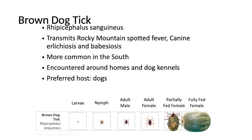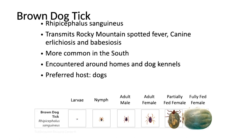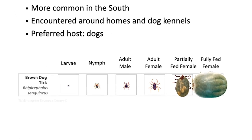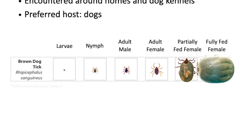The brown dog tick is very uncommon in our area — it's a lot more common in the south. It looks different than our other ticks, so if you see a brownish tick that's a little bit bigger and looks kind of weird, you can always save it and call me or send it to one of the tick resources. They really prefer dogs as a host.